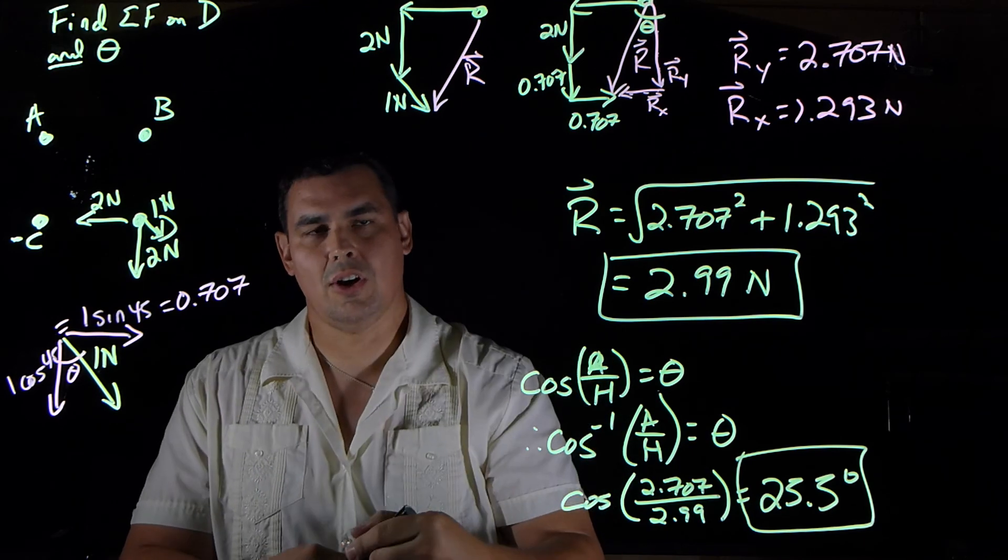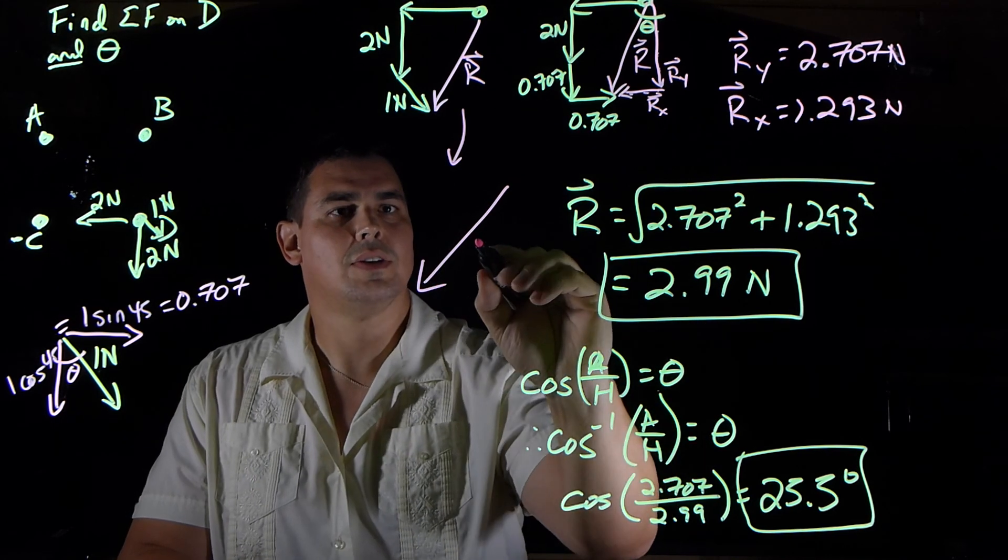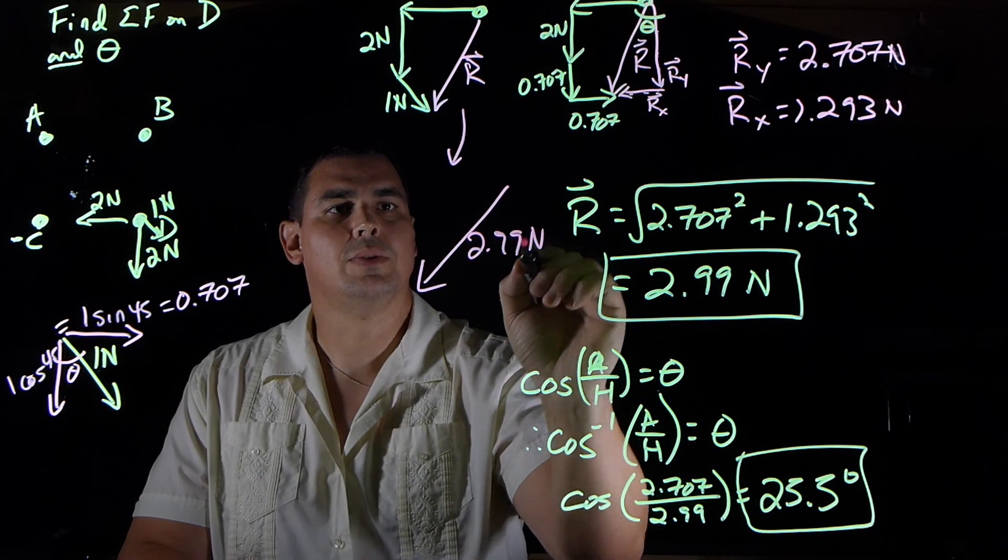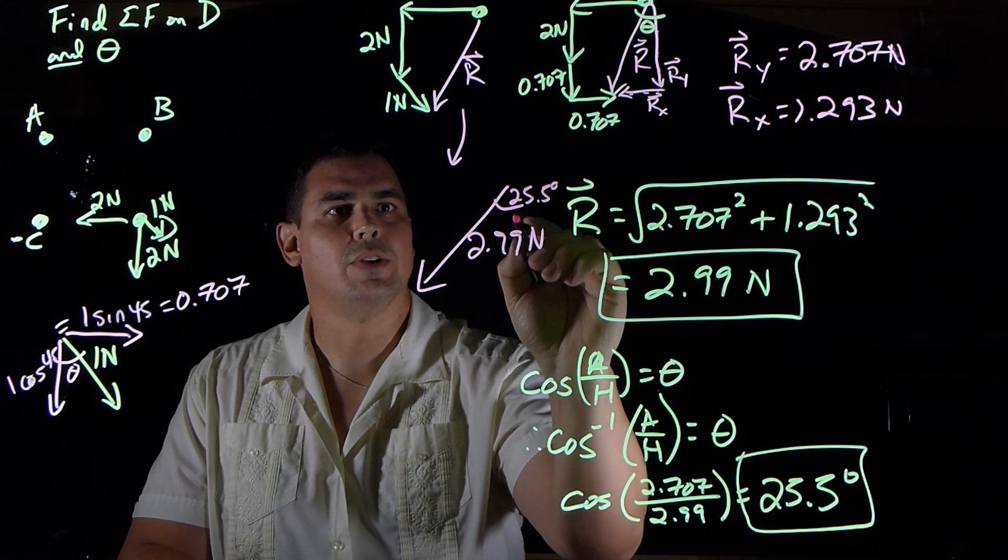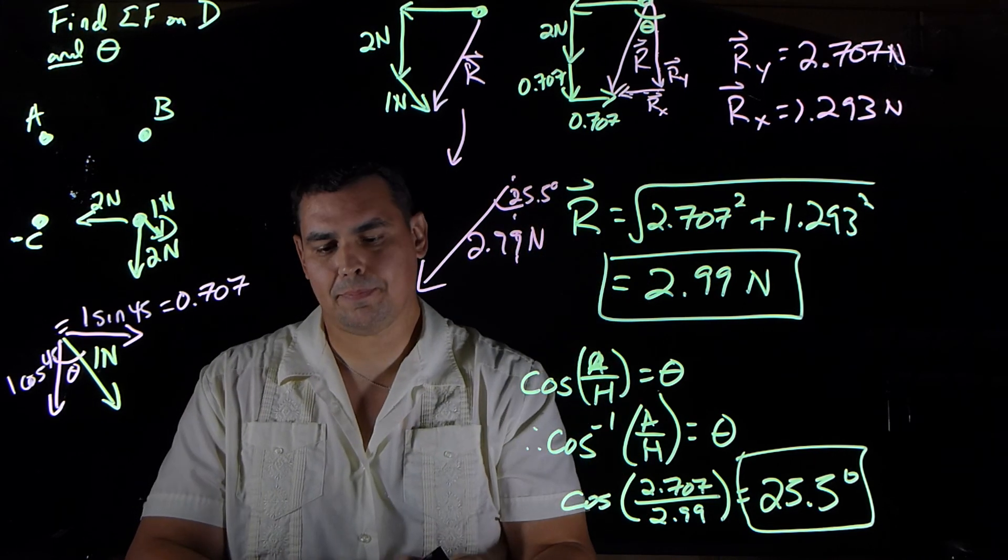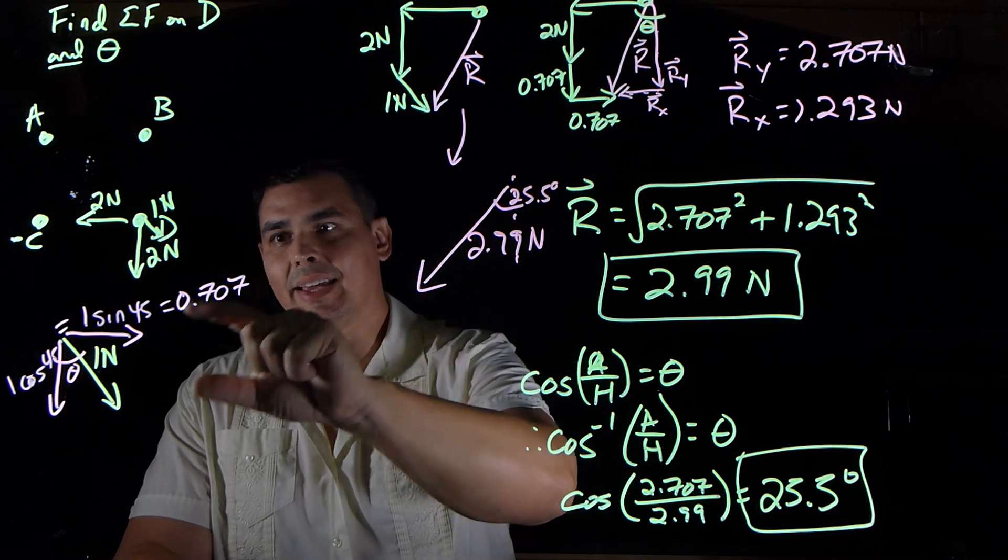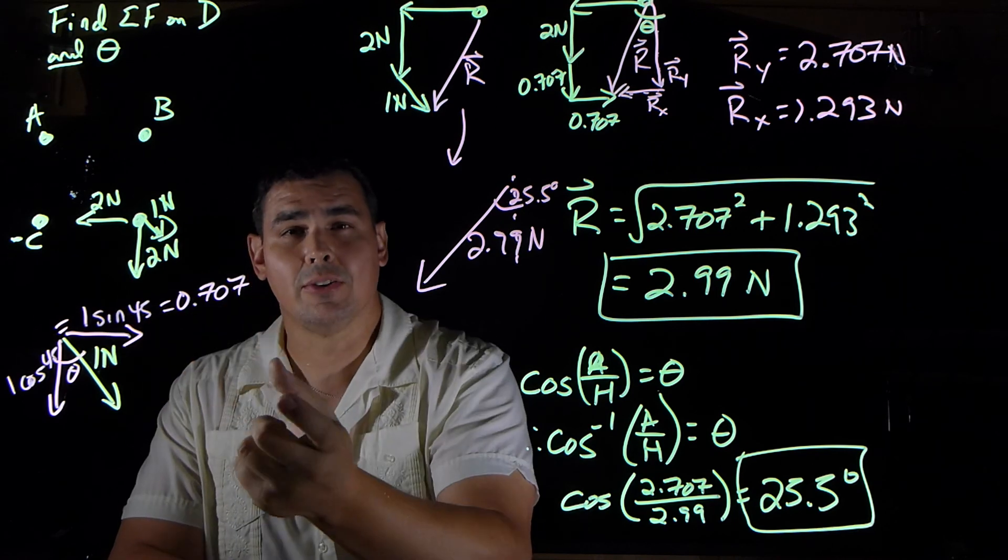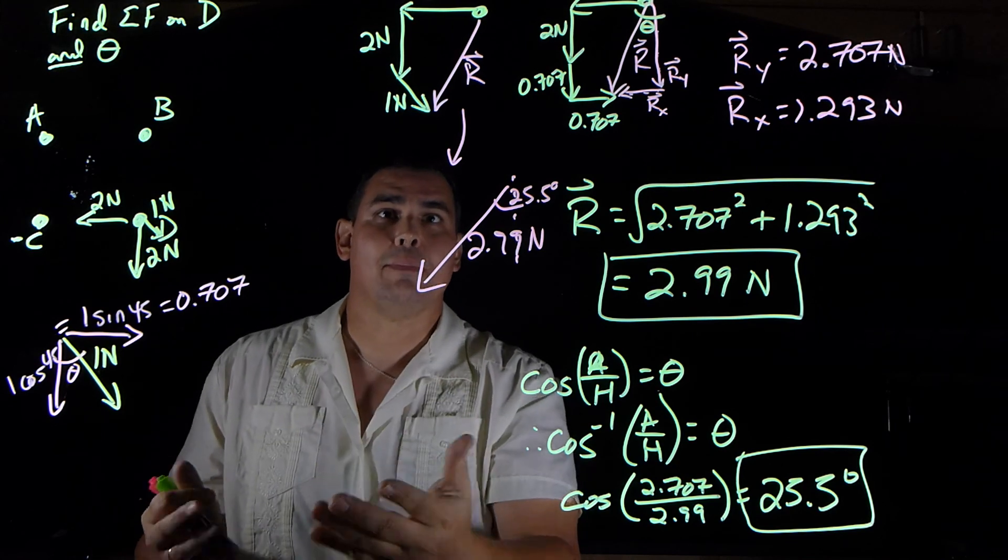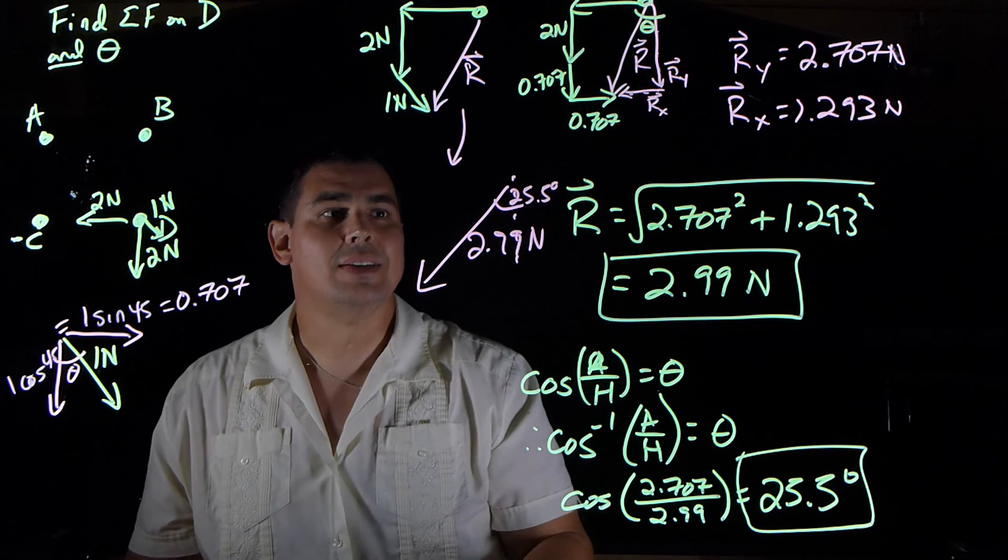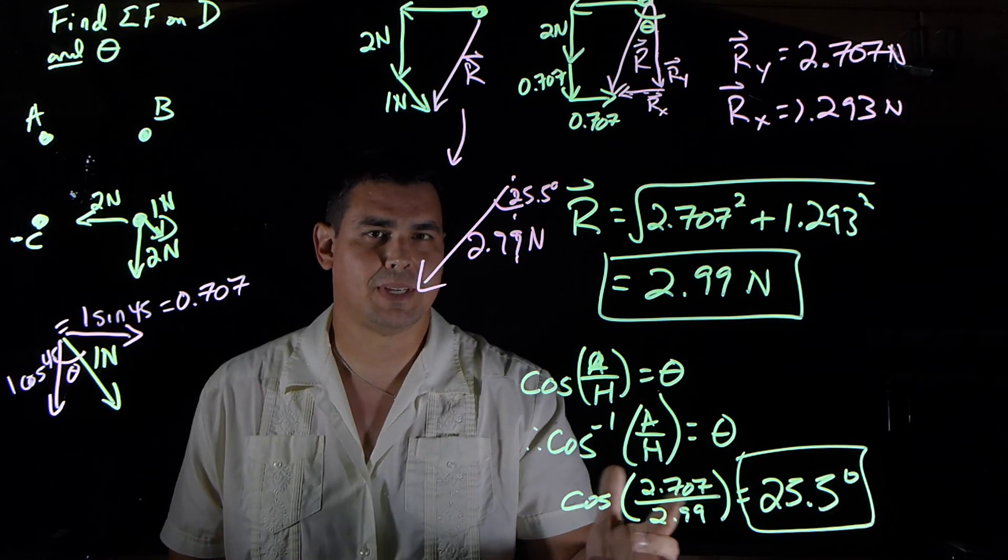So again, this R is 2.99 newtons, and it's acting at an angle of 25.5 degrees from the Y. So they're all basically the same concept. This one was a little harder because we had to take a vector that was originally at an angle, and we had to break it down into its X and Y. But once you get to that point, when you get everything in your X's and Y's, it becomes the same thing. Pythagorean theorem, and then sine, cosine, and tangent. Okay, hope that helps.